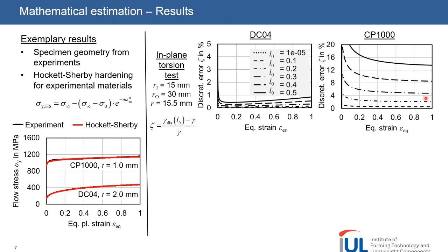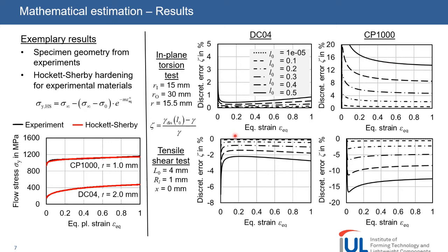The larger the strain gauge length, the higher the error. In addition, our analytical model estimates the larger deviation for CP1000 that we also saw in the experimental results. For the shear test, we see the negative error, meaning that the discrete strains are lower than the exact ones. The analytical estimation for CP1000 again shows larger discretization error. This exemplary analysis confirms the experimental results. In addition, we can conclude that the measurement deviation depends on the material behavior, the strain gauge length and the specimen shape, and the analytical model is capable to estimate these deviations.